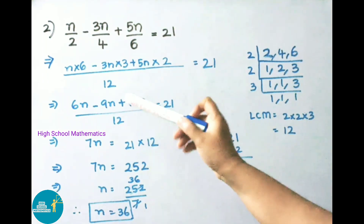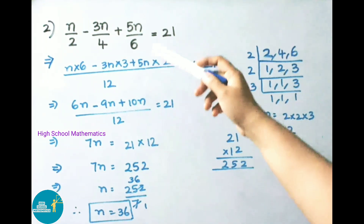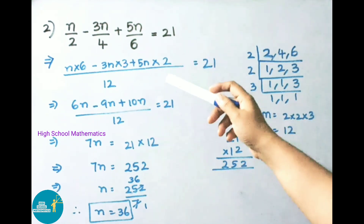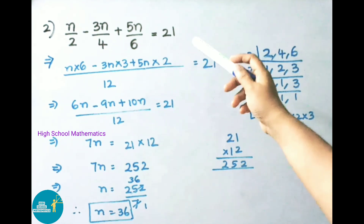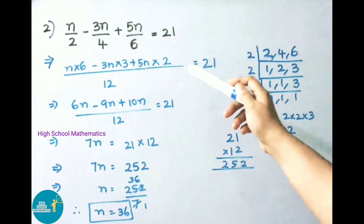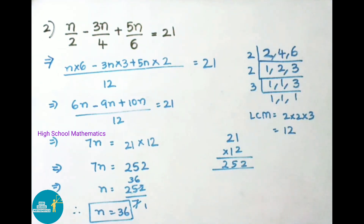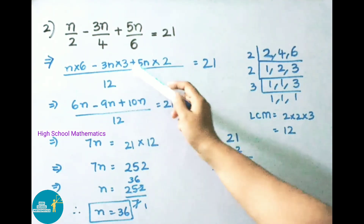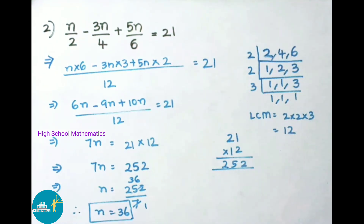Question number 2: n/2 - 3n/4 + 5n/6 = 21. Now we have to find the LCM for the denominators 2, 4, and 6.